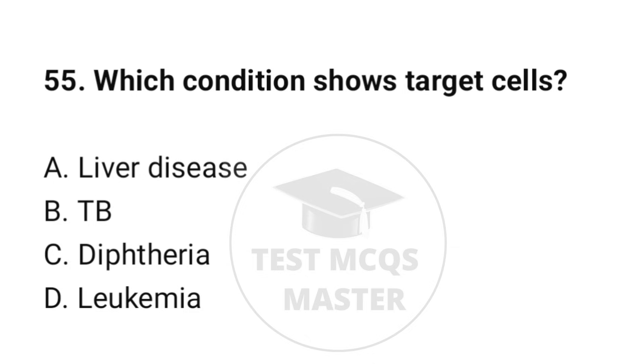Question number 55: Which condition shows target cells? The correct option is C: Liver disease.